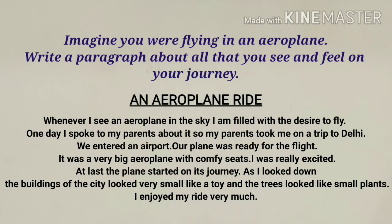So this was a small paragraph on airplane. Now I am going to explain it line by line. The first line is: 'Whenever I see an airplane in the sky, I am filled with the desire to fly.' It means I am very excited about the ride of the airplane, so whenever I see an airplane in the sky I wish I could sit in it sometime. Desire means to have a wish. In the second line: 'One day I spoke to my parents about it' — since I was having this wish and desire, I spoke to my parents about it.